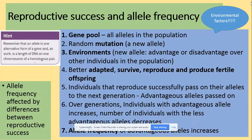In terms of the environment, new alleles could be disadvantaged or advantaged over other individuals in the population. Those with advantageous alleles could be better adapted, have a higher chance to survive, reproduce, and produce fertile offspring. Individuals that reproduce successfully pass on their alleles to the next generation. Over generations, individuals with advantageous alleles will increase in number and those with disadvantageous alleles will decrease, so the frequency of advantageous alleles will increase.